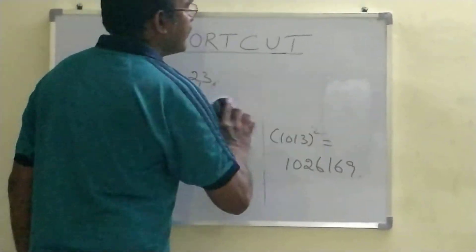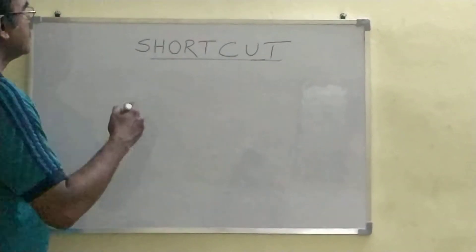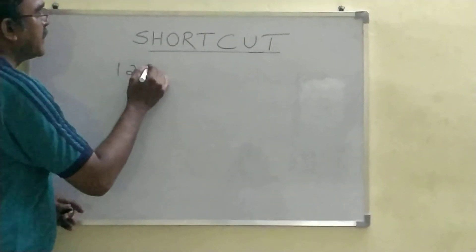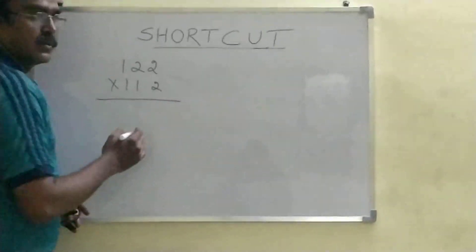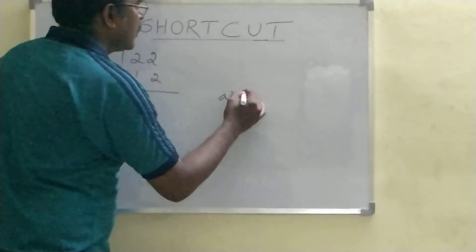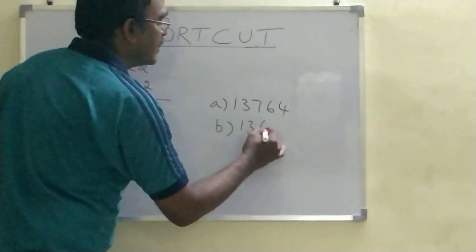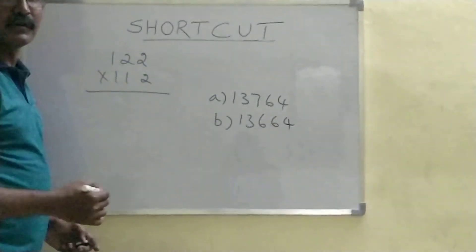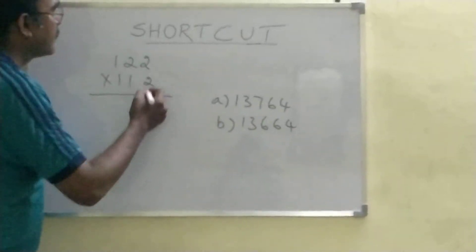Let's go for some more numbers. 122 multiplied by 112. What are the options? 13,764 or 13,664. Out of two options, one is correct.